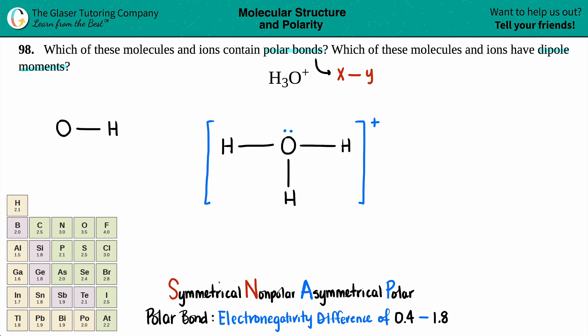Now, if you have polar bonds, that means that your electronegativity difference between your two elements of that bond is in between 0.4 and 1.8. And remember, a difference just means subtraction. So you just have to find out the electronegativity values, subtract them and see if you're in the realm of a polar bond.